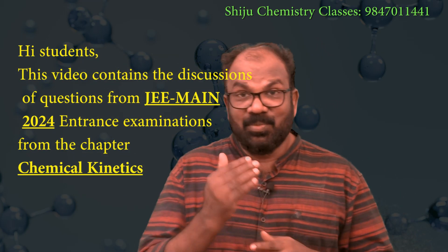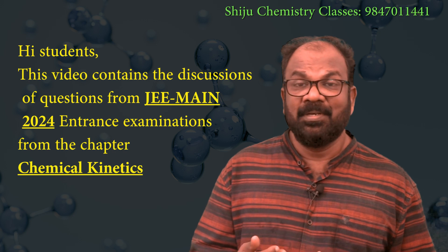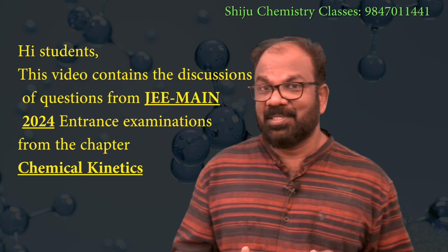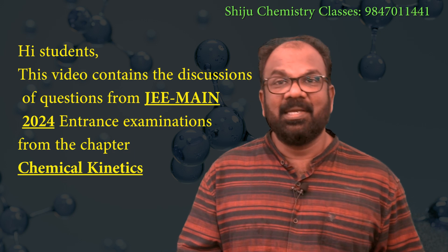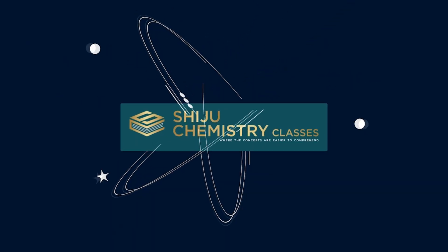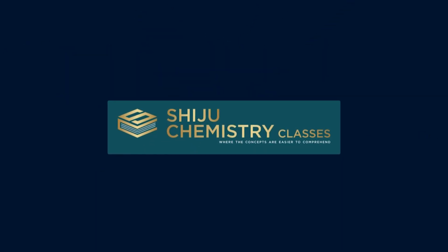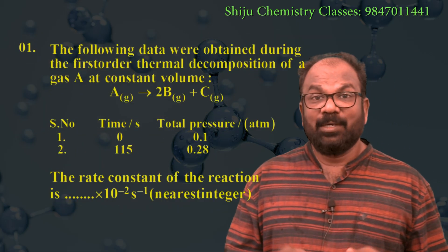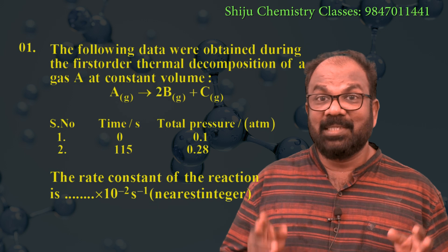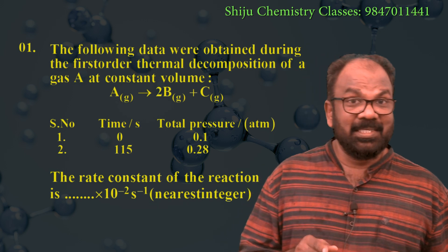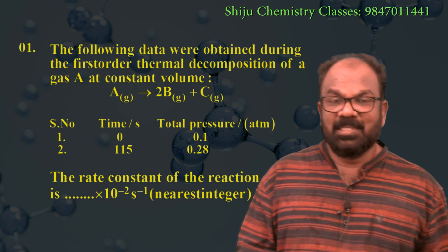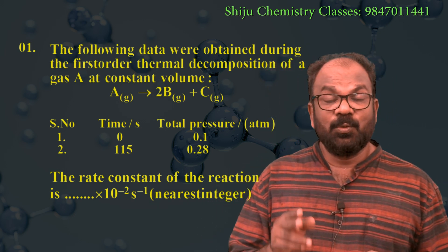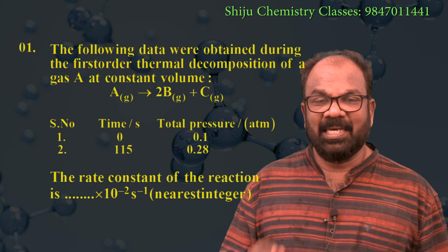Hi students. This video contains discussions of questions from JEE Main 2024 entrance examinations from the chapter Chemical Kinetics. Question number one: the following data were obtained during the first order thermal decomposition of a gas A at constant volume. The reaction given is: A(g) → 2B(g) + C(g).